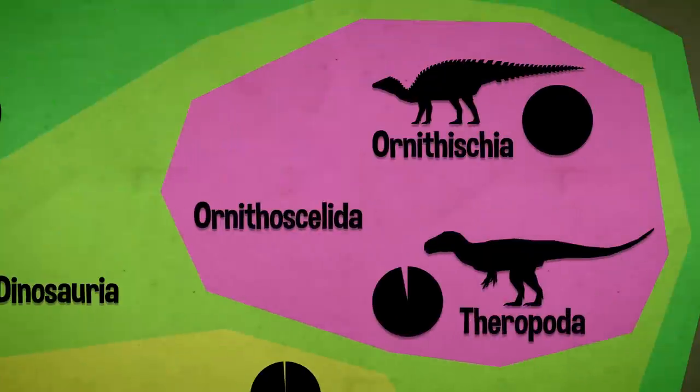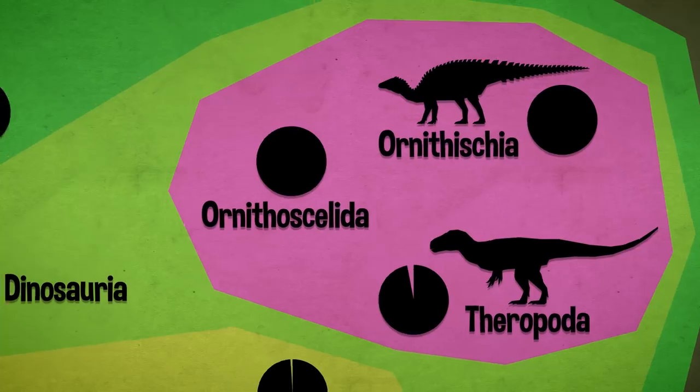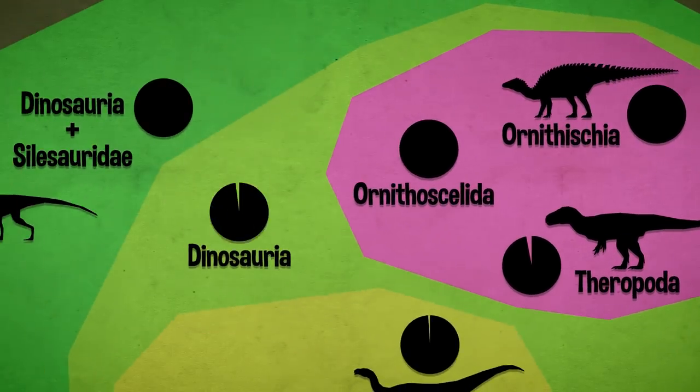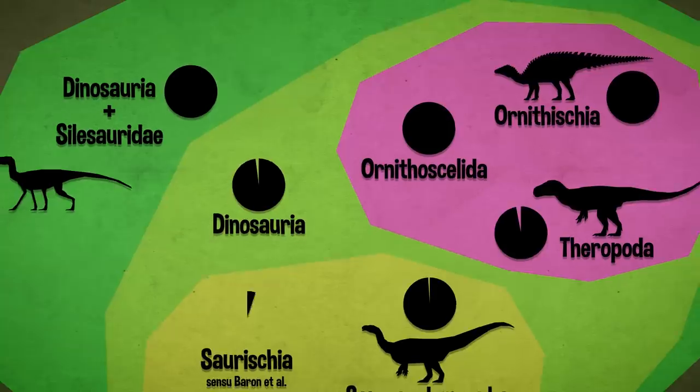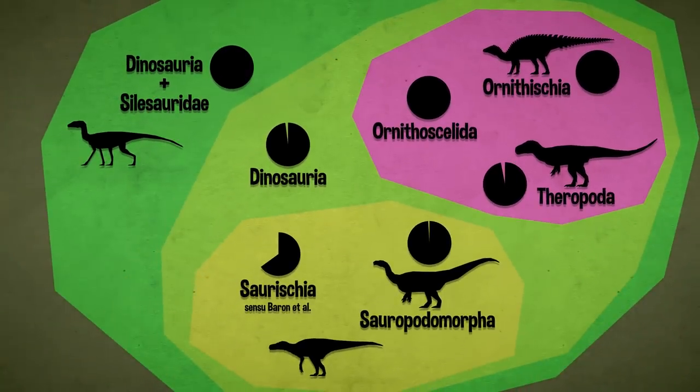So Ornithischia and Ornithoskelida, given the observations they made, both have a posterior probability of 1. Dinosauria itself, 0.96. Sauropodomorpha plus Herrerasauridae has 0.66 or 0.65 when they treated certain characters as ordered.